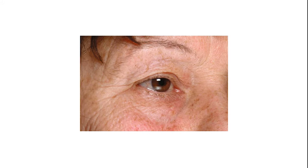Upper eyelid hooding: the attenuation of the orbicularis oculi muscle and the orbital septum, orbital fat pad pseudo-herniation, as well as the progressive gravitational descent of the forehead skin and upper lid laxity can produce upper eyelid hooding, which is usually more pronounced in the lateral aspect. The fullness in the medial aspect is due more to orbital fat pad pseudo-herniation than skin excess. The redundancy of the skin, or dermatochalasis, can be assessed by pinching the excess of eyelid skin with a forceps until the eyelashes begin to evert.